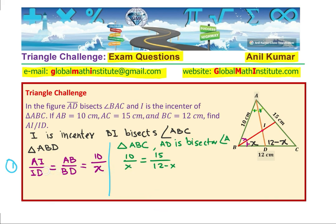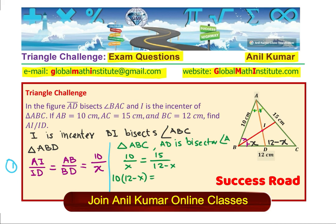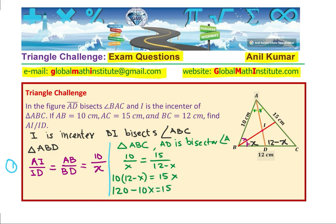Once we find this value, we get the ratio of AI over ID, substituting the value of X. Let's cross multiply to find the value of X. We get 10 times 12 minus X equals 15X, which is 120 minus 10X equals 15X. Let's simplify further, taking X terms on one side. We get 120 equals 15X plus 10X, or 120 equals 25X. So 120 by 25 is the value of X.